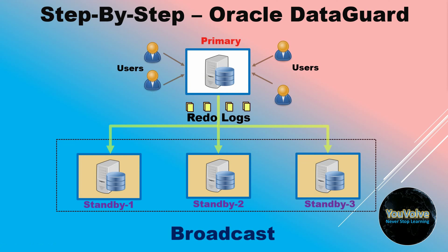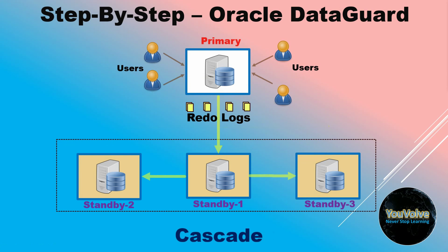Let's take a look at this diagram. Here it is like a broadcast or regular configuration with three standby databases receiving redo data simultaneously from the primary database. In a cascade configuration, a standby database receives redo data from one primary DB and then that standby database sends the redo data to the second and the third standby database.